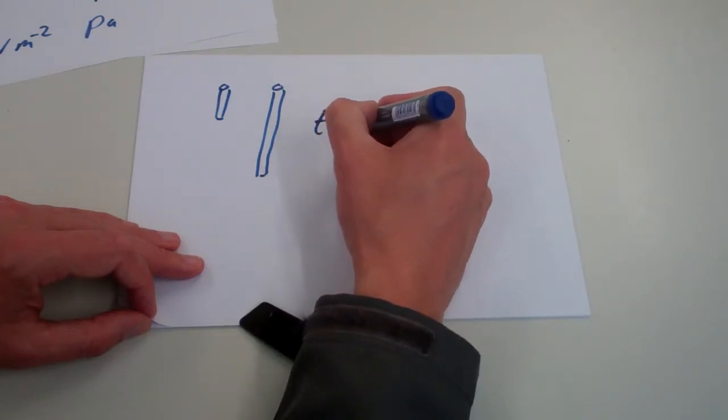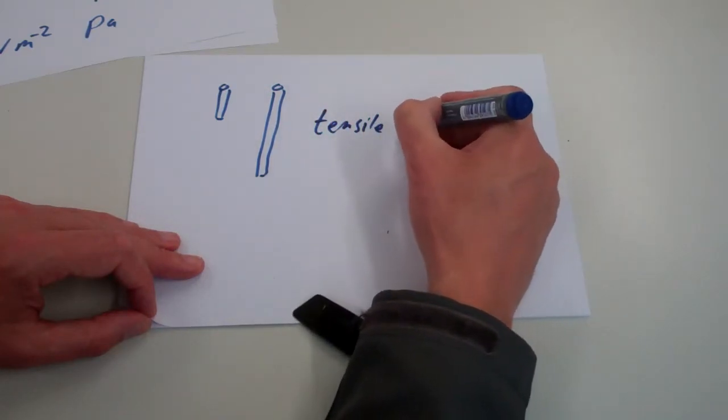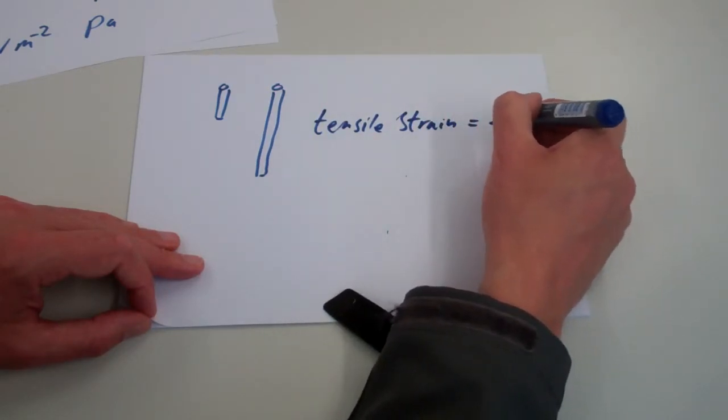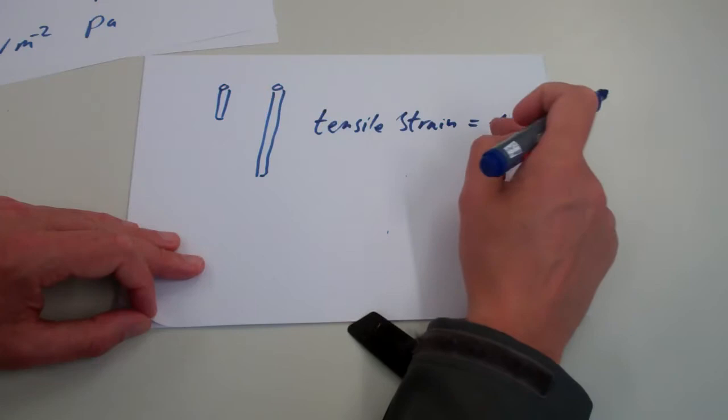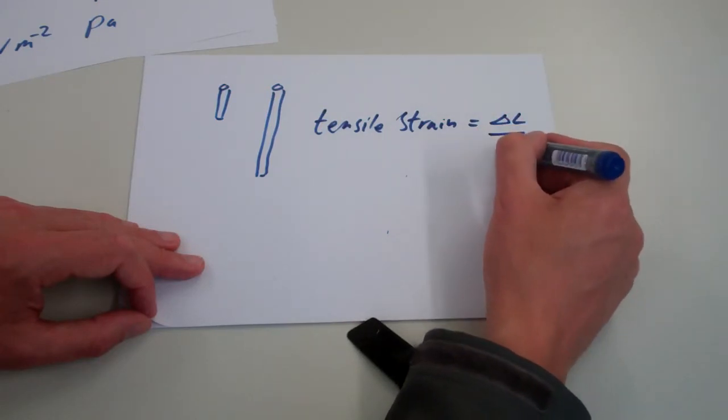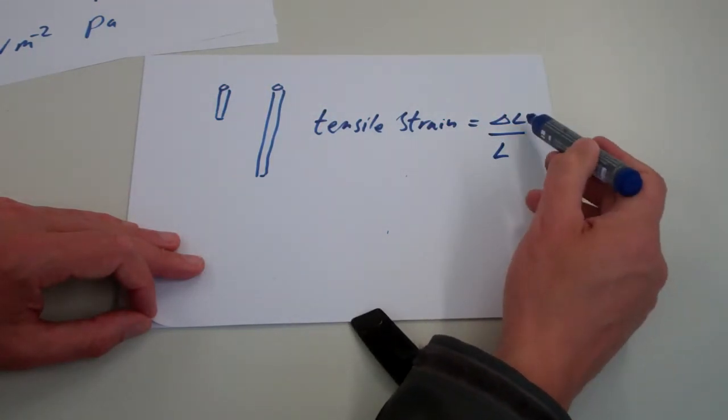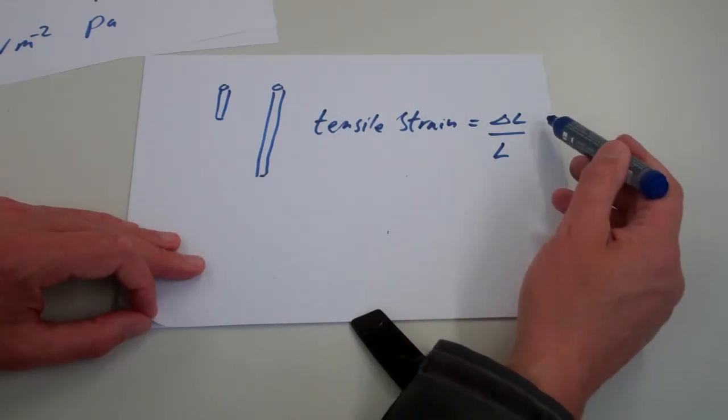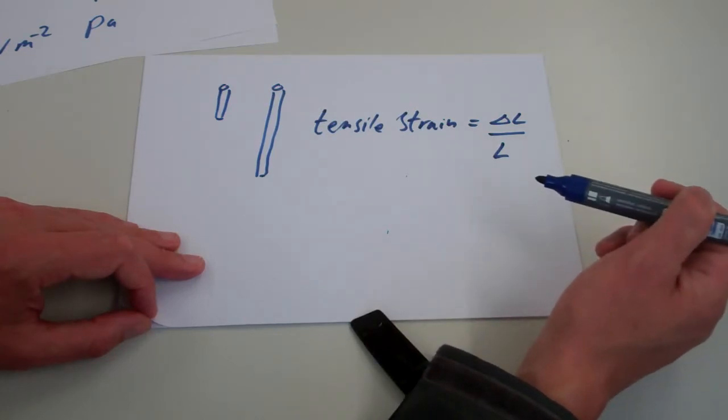So again, we have the word tensile for stretching. Tensile strain is the extension, which we use delta L, delta being the little Greek letter that means change, over L. And this has no units, because these would have both been measured in the same unit. Normally we measure both in meters, but frankly, they could both be in miles in this case, and we'd still get the same answer.